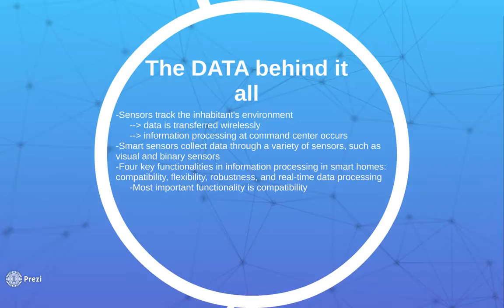One of the most important parts of this process is the data and the actual conversion of these sensors into making real changes in the house. The sensors are known as smart sensors within a smart home. There are two main types: visual sensors, which could be cameras tracking movements, and contact switch sensors, also known as binary sensors.